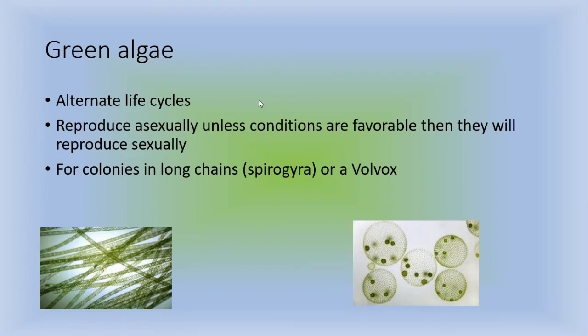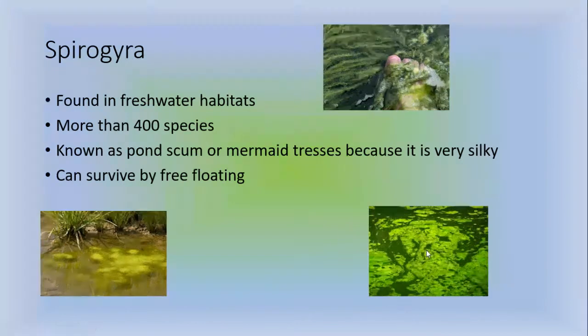Green algae alternate life cycles. They reproduce asexually unless conditions are favorable, then they will reproduce sexually. And they have colonies either in long chains called spirogyra or a volvox. The spirogyra is found in freshwater habitats. There's more than 400 species. It's known as the pond scum or mermaid tresses because it is very silky and it can survive by free floating. So it looks like any one of these pictures here. If you've ever stuck your foot into it, it's kind of gross.